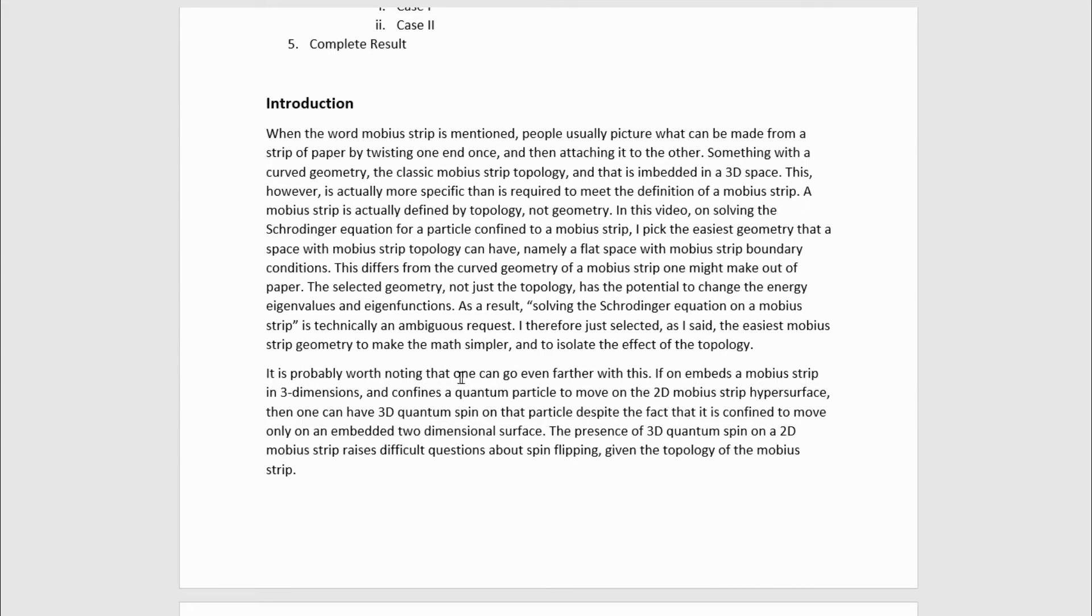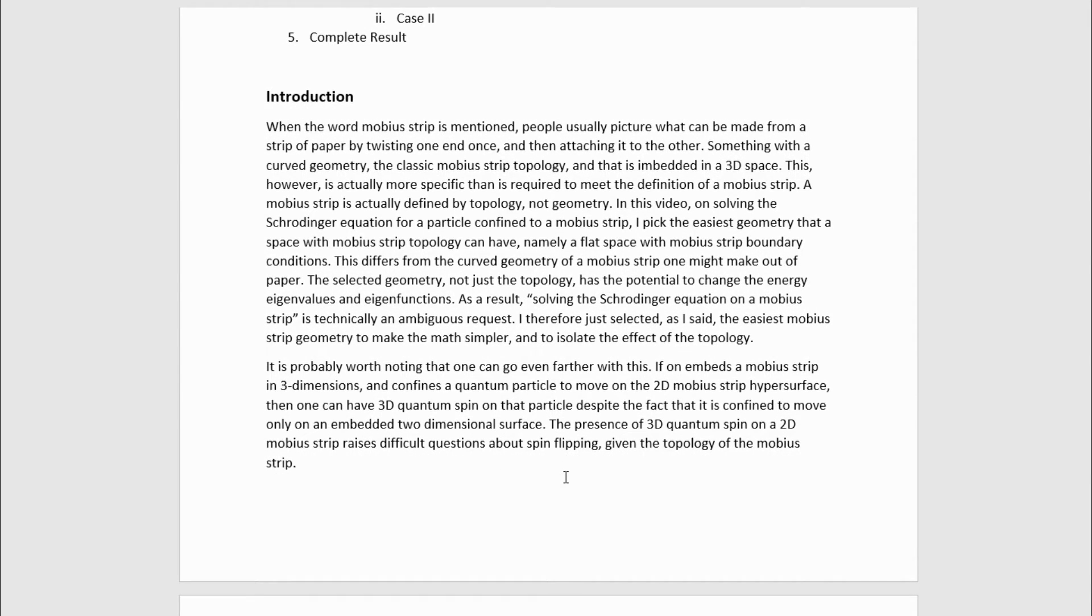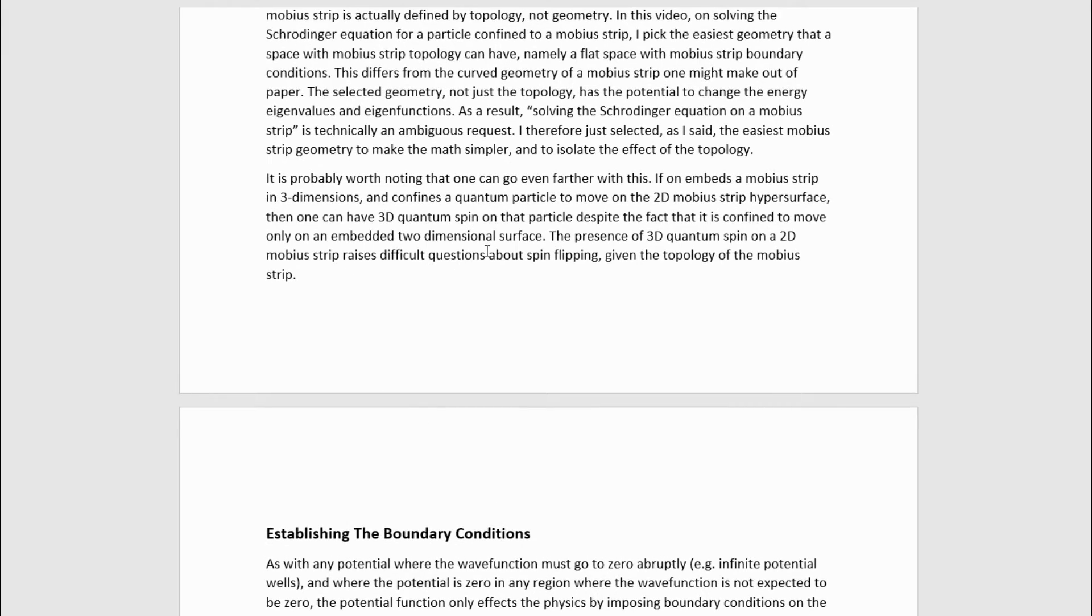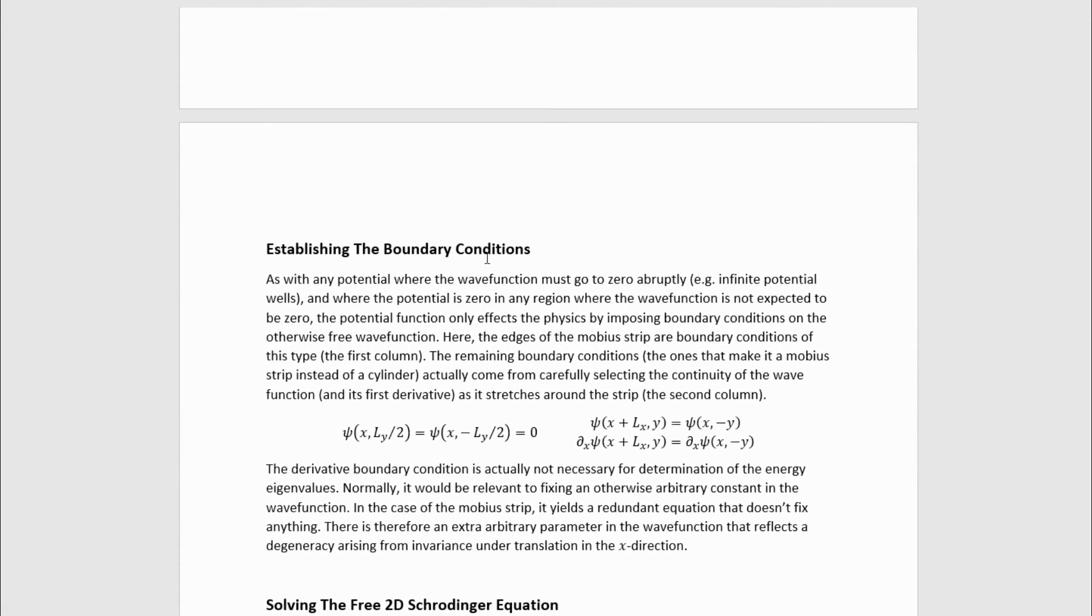It is probably worth noting that one can go even further with this. If one embeds a Mobius strip in three dimensions and confines a quantum particle to move on the 2D Mobius strip hypersurface, then one can have 3D quantum spin on this particle despite the fact that it is confined to move only on an embedded two-dimensional surface. The presence of 3D quantum spin on a 2D Mobius strip raises difficult questions about spin flipping given the topology of Mobius strip. So now that we've figured out what kind of problem we need to solve, let's get started solving it.